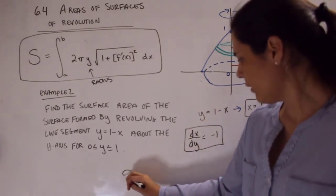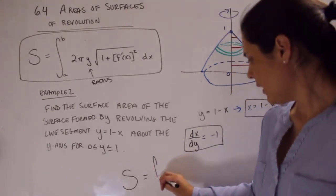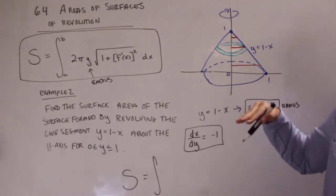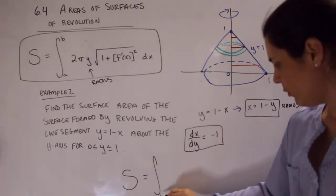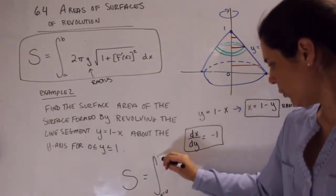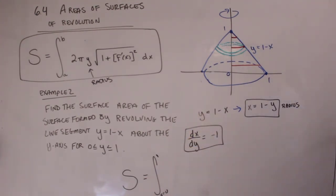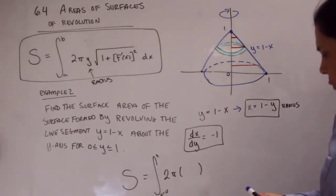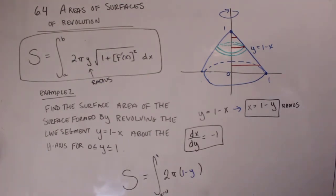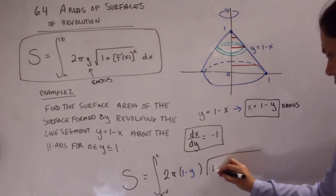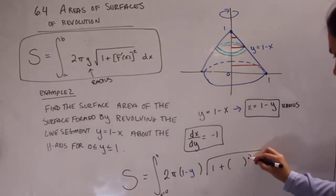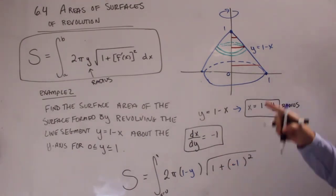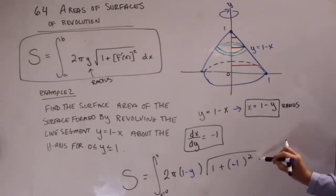So going back to our surface area integral, the surface area is the integral. In this case, our a to b, you can kind of call it a different letter if you want, maybe c to d, is our y values. So from y goes from 1 until y equals, from 0 until 1. And then we have 2 pi, our radius in terms of x was 1, when we solve for x is 1 minus y. And then times our square root of 1 plus our derivative squared, and our derivative was negative 1. And because we're focusing on y, we revolved around the y-axis. This is dy.